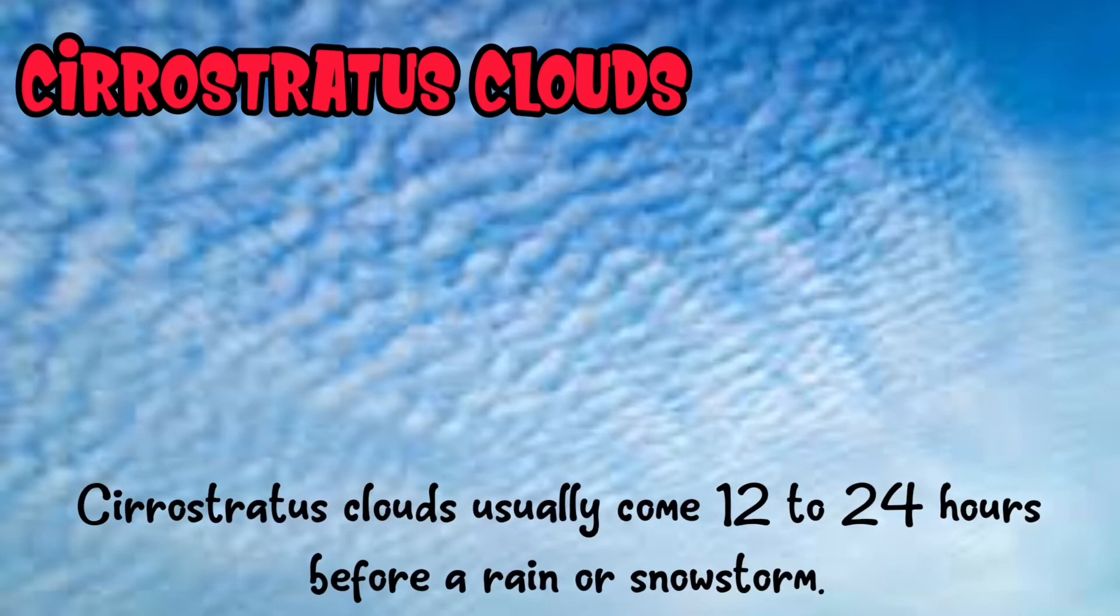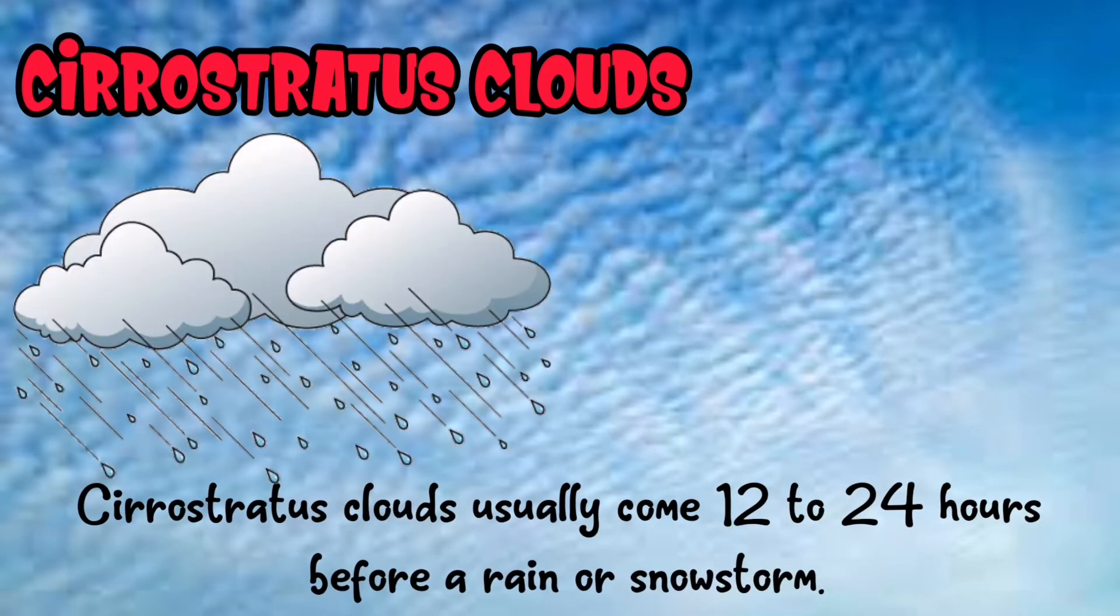Cirrus clouds are thin and wispy, appearing high in the sky. The word cirrus means a curl or wrinkle in someone's hair. When cirrus clouds bunch together with other cirrus clouds and turn grey, they form cirrus stratus clouds. It means it will rain or snow within 24 hours.